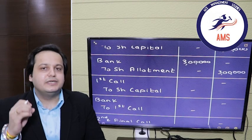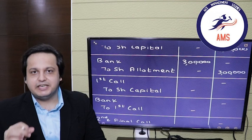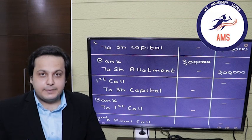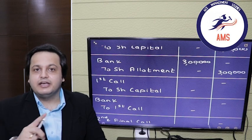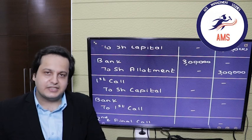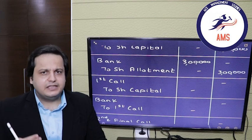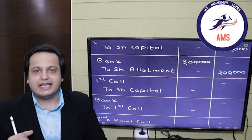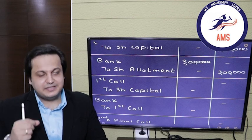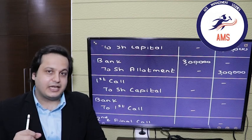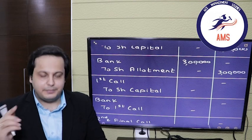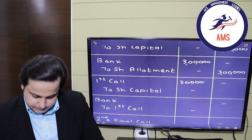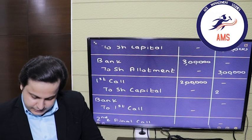Now we move to the first call. Mind you, there was a default in the first call and the second and final call. First, let's make the money due. The entry is: first call account debit to share capital — 1 lakh shares multiplied by 2 rupees equals 2 lakh rupees. So first call account debited by 2 lakhs and share capital credited by 2 lakh rupees.